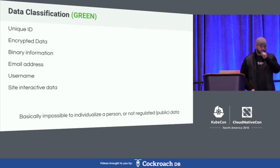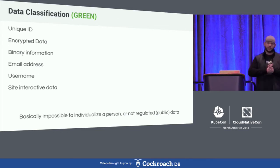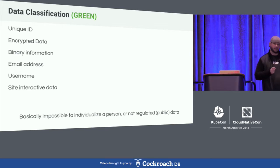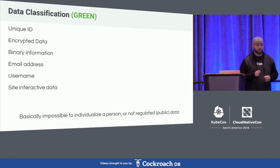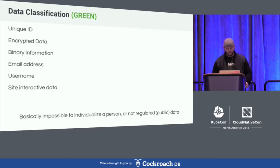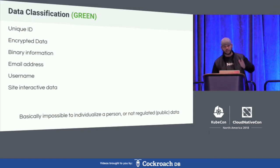Finally, you have green data. Green data is any information where, regardless of how much of it you have, there is no way to take that data and identify an individual — things like an email address, username, a unique ID, or binary information in a database where you obviously can't use that to ID someone. Anything like that you can classify as green data.